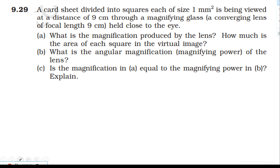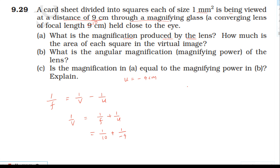The focal length is 10 centimeter. The object distance is 9 centimeter. Using the lens formula: one by v minus one by u equals one by f. So one by v equals one by ten plus one by u. With the sign convention, the object distance u is minus 9 centimeter. So one by v equals one by ten plus one by minus nine.